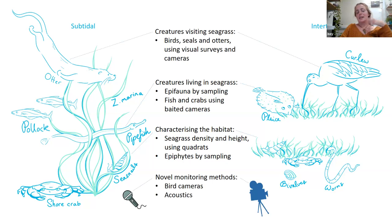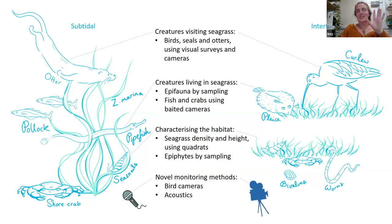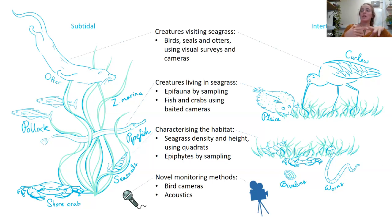Moving up again, I was looking at creatures visiting the seagrass to feed — birds, seals, and otters — which I studied using visual surveys and cameras. Finally, I was testing some novel monitoring methods: the bird cameras just mentioned, and also acoustics, which is where it gets quite exciting. I was trying to listen to the sounds of crabs and fish making noises and see if this can be used as a method for monitoring biodiversity.